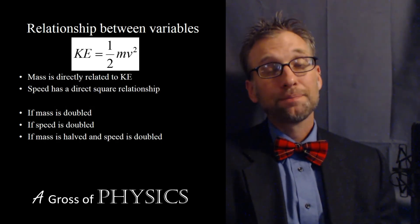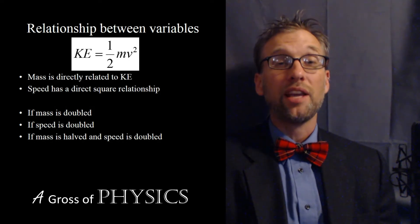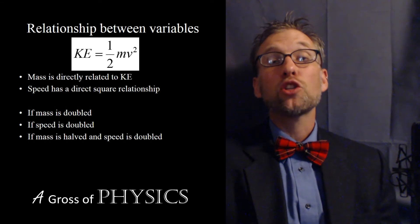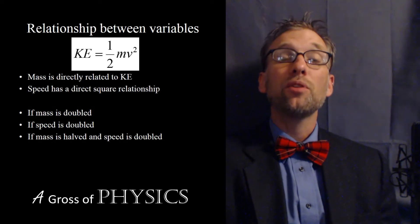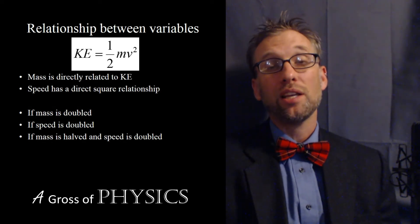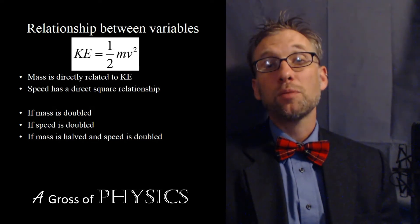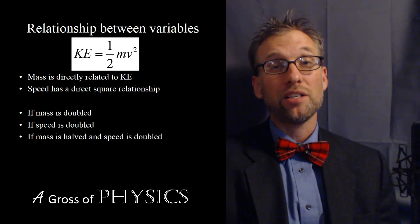The mass is directly related to the kinetic energy because they're both on the same level of the equation with no squared term, and the velocity is directly squared related to the kinetic energy. If I were to double the velocity, I'm actually increasing the kinetic energy by four times. So if you double the speed of an object you're actually giving it four times as much energy as it had originally.